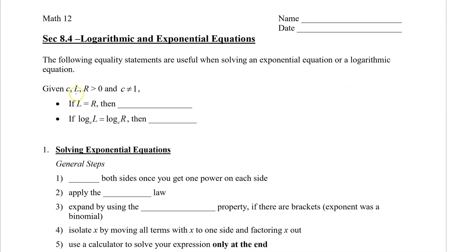We're going to be given C, L, and R, which are greater than 0, and C does not equal 1. If we start off with L equal to R, which are two different expressions, then we can log both sides and say that log L is equal to log R. This works with base 10, but also with any base C, greater than 0, but not equal to 1.